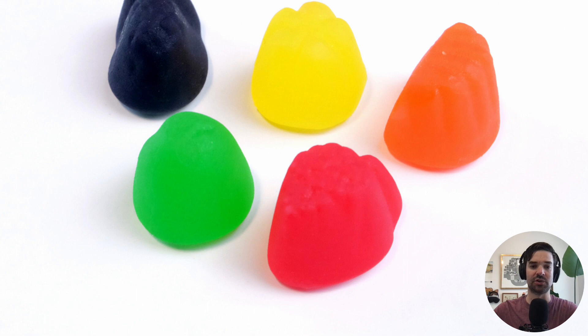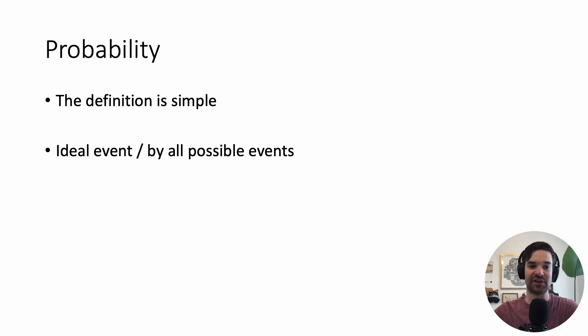Anyone who knows me knows I love candy. So if I were to look out on this table and close my eyes, I could ask myself, what's the probability of getting a red jube-jube, my favorite color, versus any other jube-jube? So what is the definition of probability? It's the ideal event divided by all possible events that could occur. So in the case of the candy, it would be a red jube-jube divided by all jube-jubes.